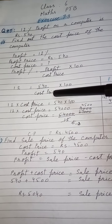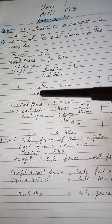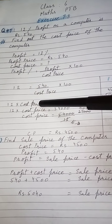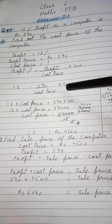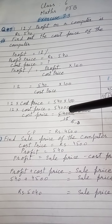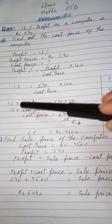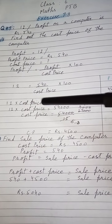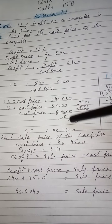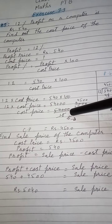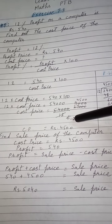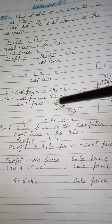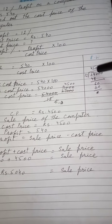آپ کو پتہ ہے کہ اگر ایک سائڈ پہ ایک چیز divide ہو رہی ہے تو دوسری جگہ جا کے وہ multiply ہو جاتی ہے۔ Cost price کو دوسری سائڈ پہ لے جائیں گے تو multiply ہو جائے گی۔ 540 اور 100 multiply ہو کے 54,000 بن جائے گا۔ 12 کو دوسری سائڈ پہ لانا ہے تو divide ہو جائے گا۔ Cutting کر کے cost price rupees 4500 آ جائے گی۔